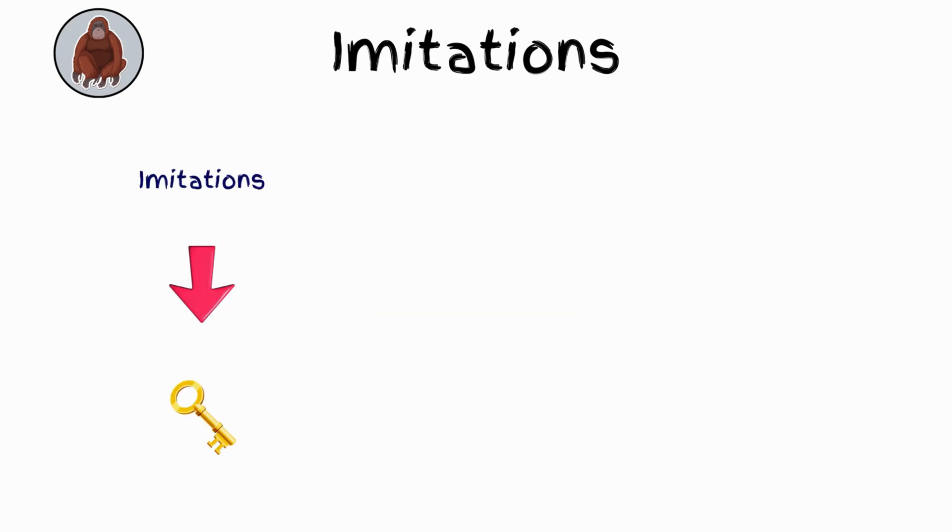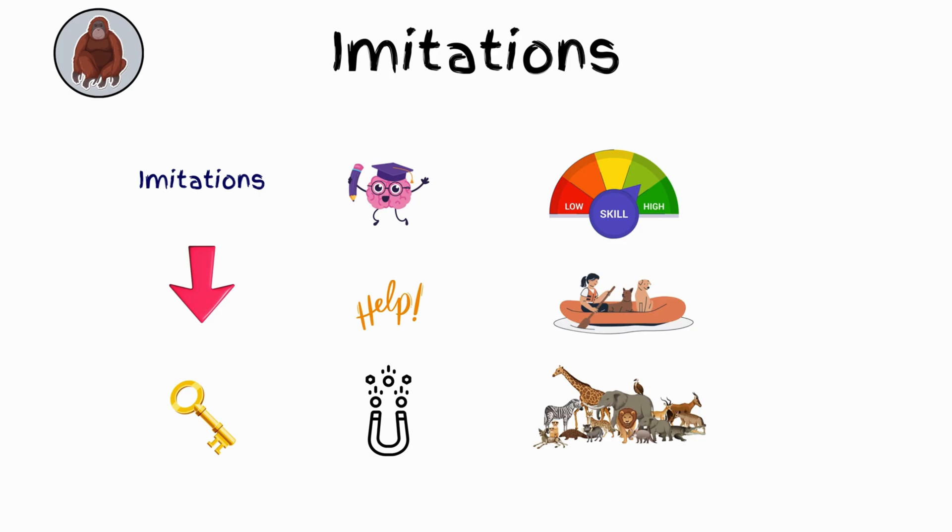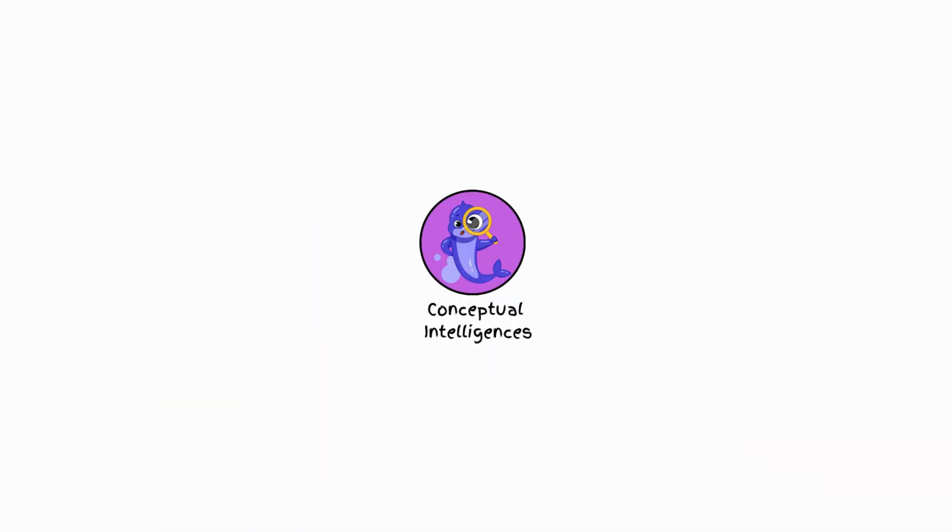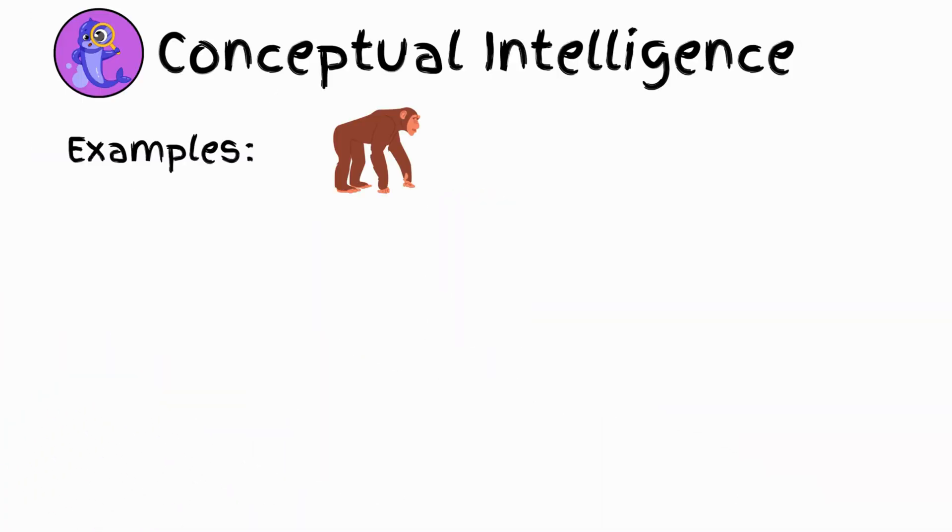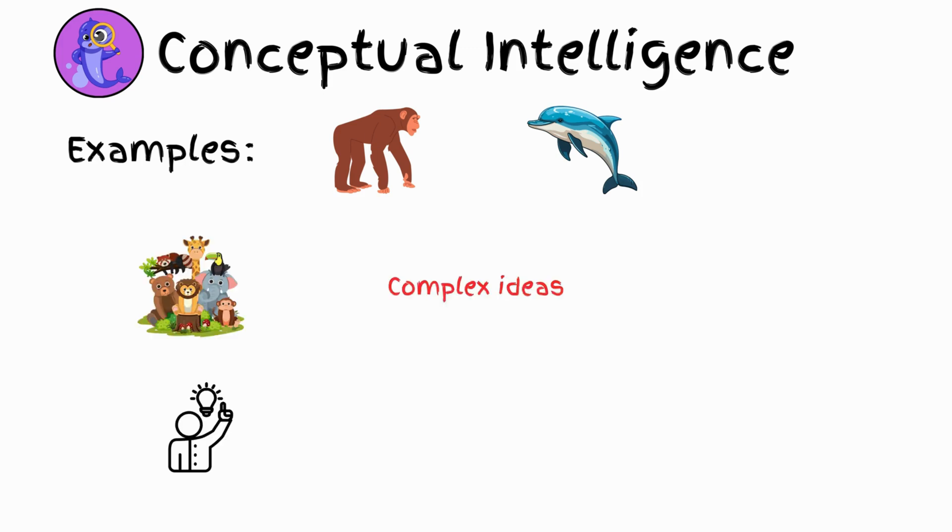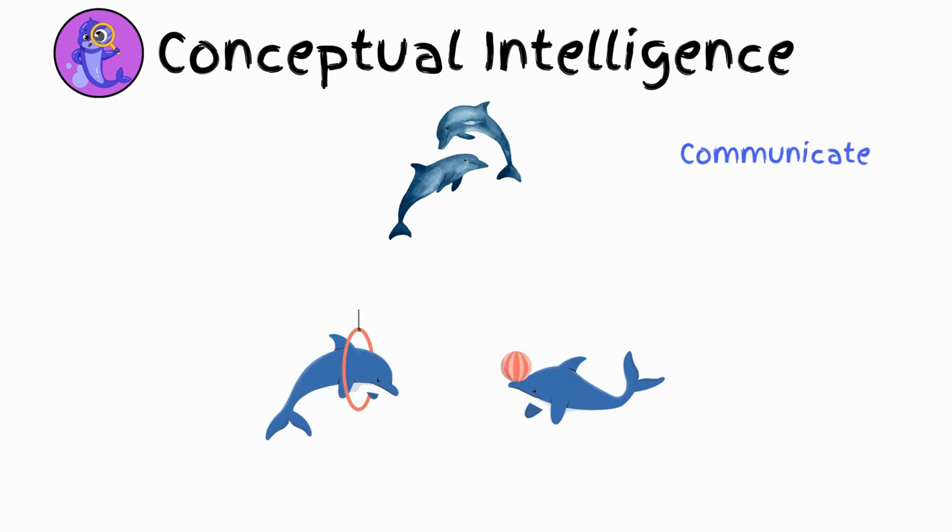Conceptual intelligence. Examples: apes, dolphins. At this level, animals begin to understand more complex ideas, like numbers or symbols. They can follow commands and solve basic problems. Some dolphins, for instance, can perform tricks on cue or communicate using symbols.